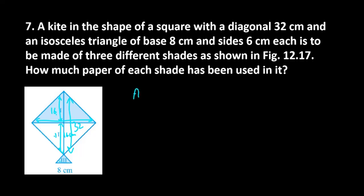So the area of the first portion will be equal to half into base into height. Base is 32 cm, height is 16 cm. 2 and 32 can be cancelled, giving you 16. 16 into 16 will give you 256 cm².